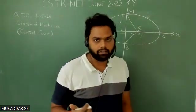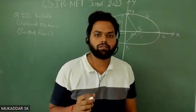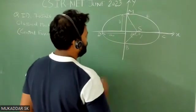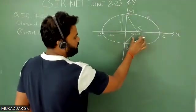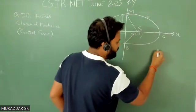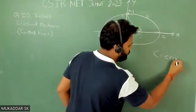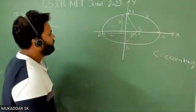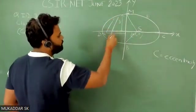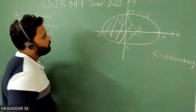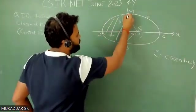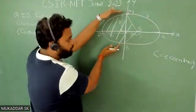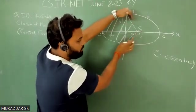We have to find the time difference, so first we need to find the area of these two portions. The coordinate of this focus is (ae, 0), where e is the eccentricity. Now let's find the area of the first portion. This portion consists of the area of half the ellipse plus the area of this triangle.